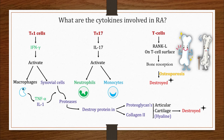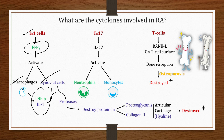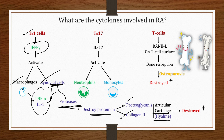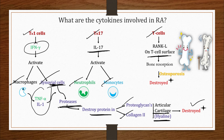Regarding cytokines in rheumatoid arthritis: Th1 cells produce interferon-gamma, which activates macrophages and synovial cells. These activated macrophages produce TNF-alpha and IL-1, stimulating synovial cells to release proteases that destroy proteoglycans and collagen in articular hyaline cartilage. Th17 cells release IL-17, activating neutrophils, monocytes, and T cells. RANK ligands expressed on T cells activate osteoclasts, which degrade bone, causing bone resorption and osteoporosis — resulting in destruction of bone, cartilage, and joints.